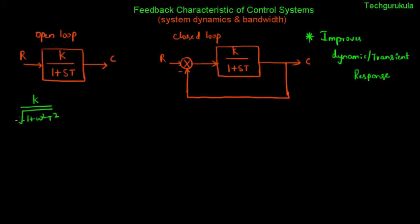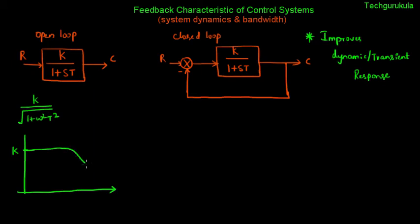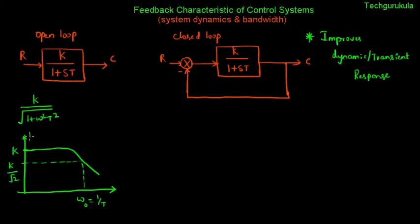If we plot this magnitude response, the zero frequency gain is k, which stays constant and then drops after a certain frequency. At ω = 1/T, the gain drops to k over √2. We call this frequency the cutoff frequency, and for reference we denote it as ω_o, representing the open loop cutoff frequency.